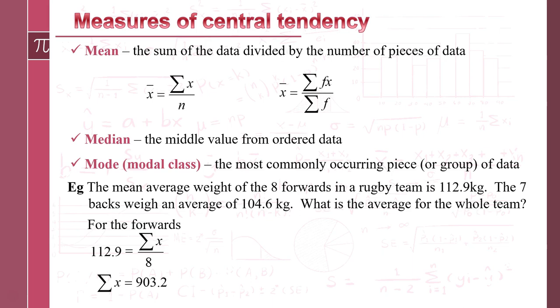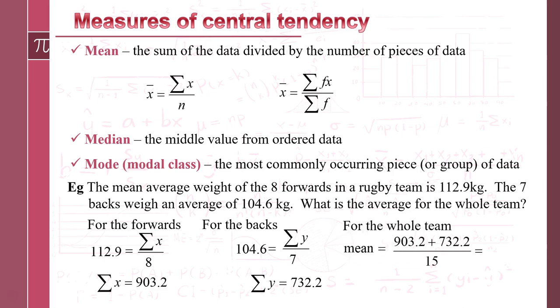If we do the same with the backs, this time we're going to use y to represent the backs. So there we go, same again, and now we've got sum of y over m this time to represent how many backs we've got. Put in the values same as we did before, and so we've got the total weight of all the backs. And then clearly the average for the whole team is going to be those two bits added together and then divided by 15, and so the average weight of the whole team is 109.03 kg.